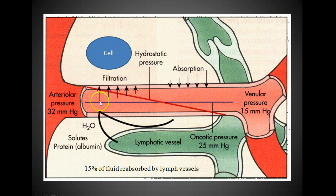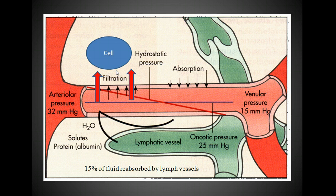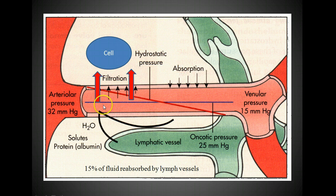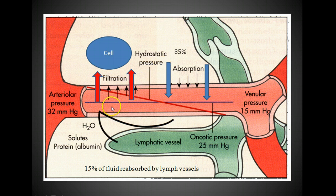Looking at the diagram: here's an arteriole and here's a capillary. Remember, we talked about how things like oxygen diffuse out of capillaries into cells. In order for things to diffuse out, they have to be dissolved in fluid, so fluid also leaves the capillary along with oxygen and other nutrients. What has to happen is we have to get this fluid back. It will diffuse out at the arterial end of the capillary, and most of it — about 85% — will diffuse back into the venous end of the capillary. So what happens to the rest of it?